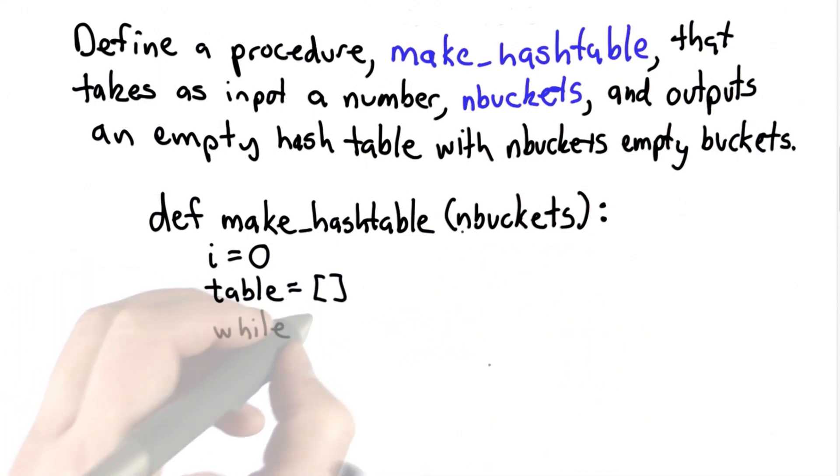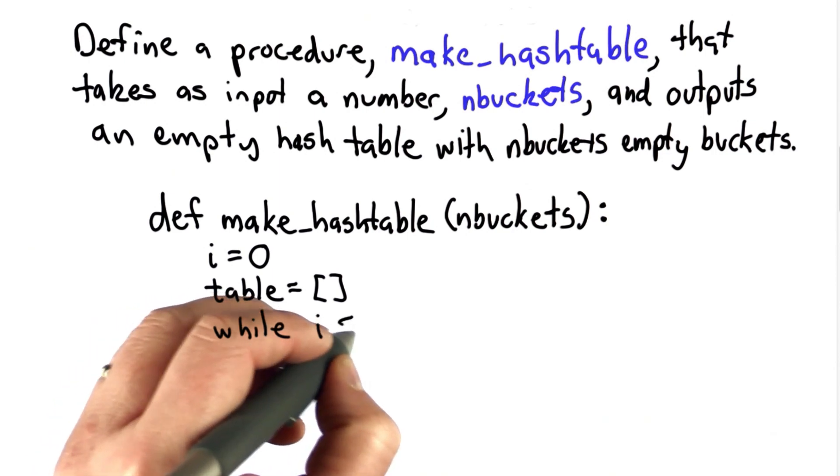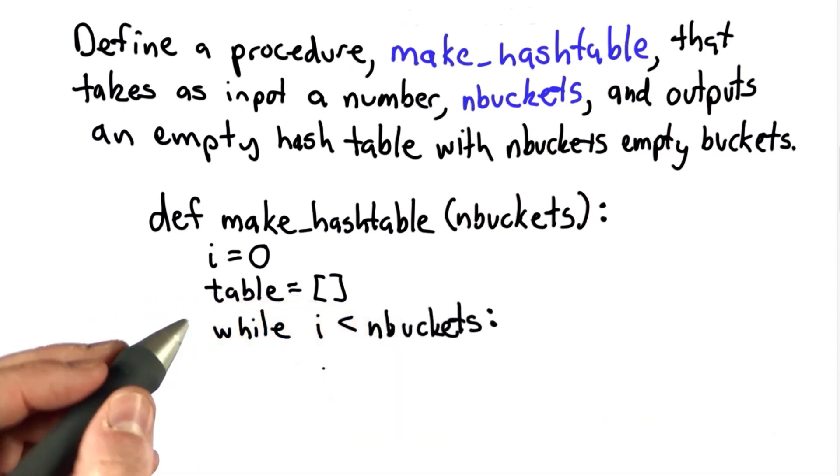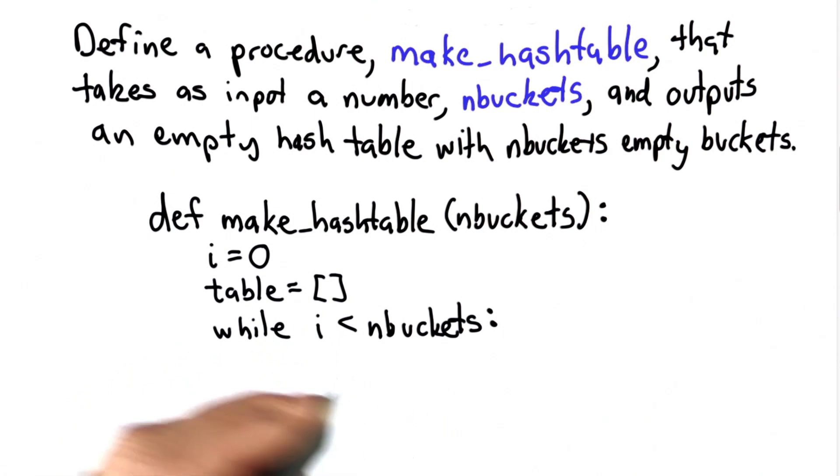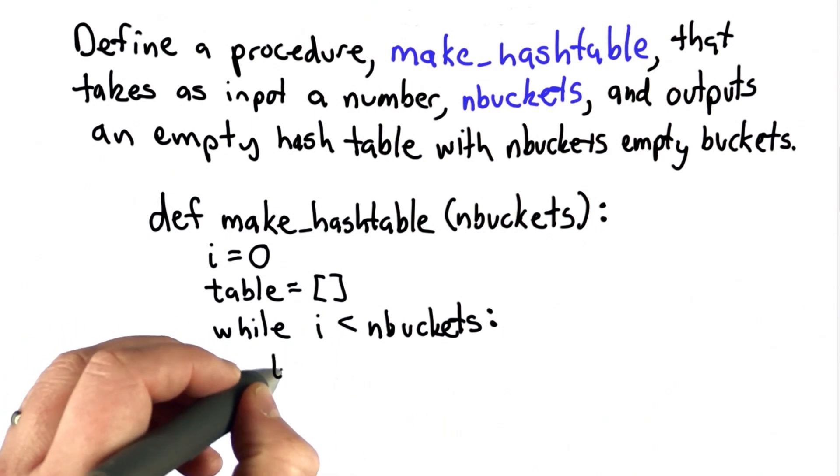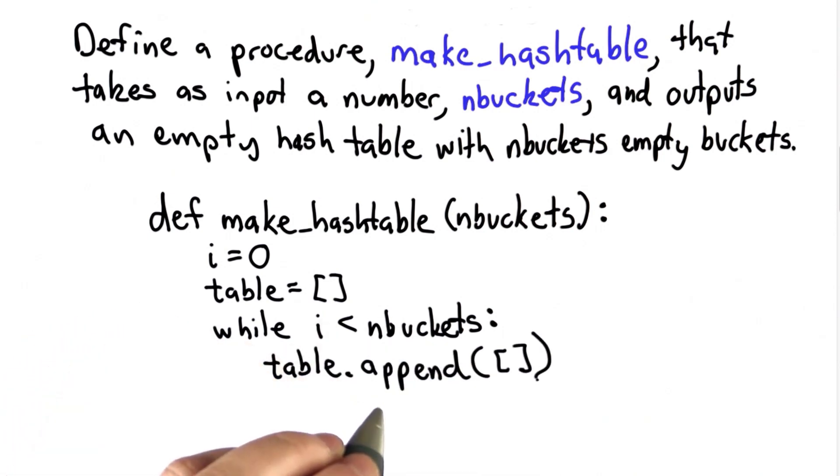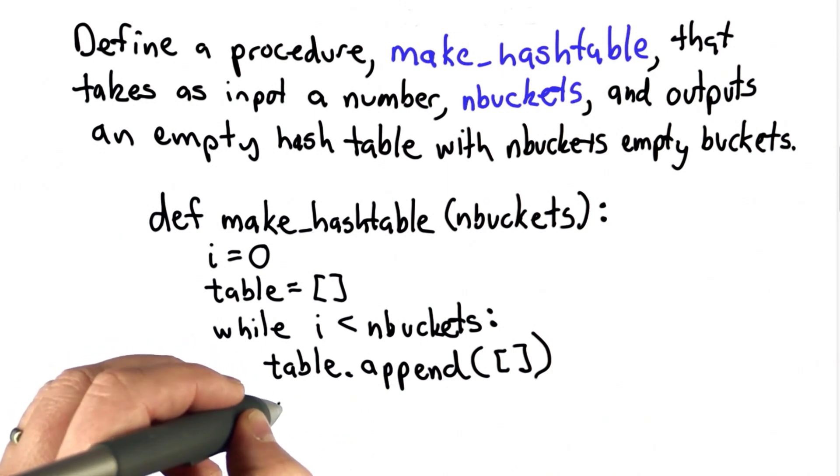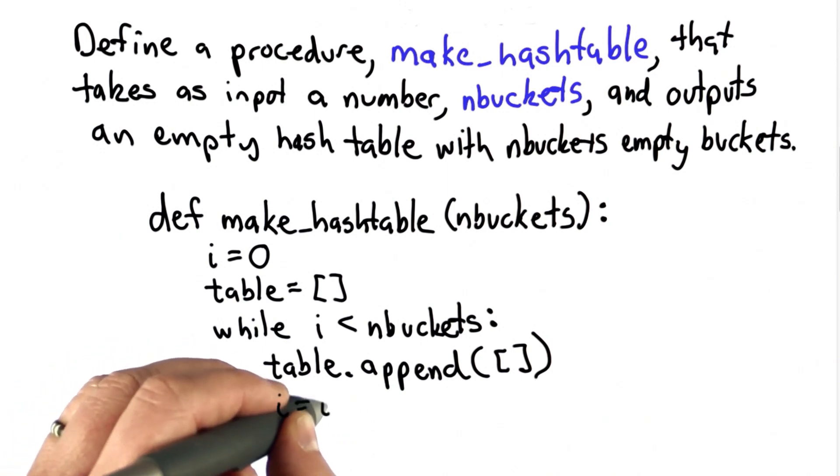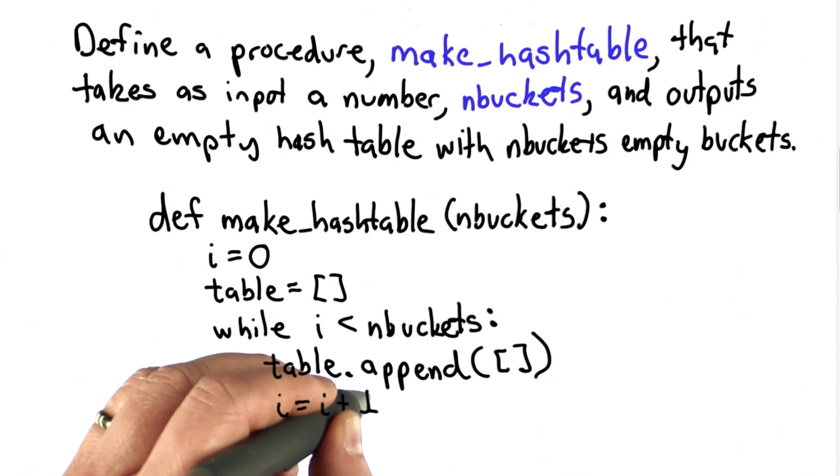So we're going to use a while loop. And we're going to loop while i is less than the number of buckets. So each time we go through the loop, what we want to do is add one empty bucket to our hash table. So we can do that using append. That adds a new empty bucket. And we need to remember to increase i to make sure we don't keep looping forever.